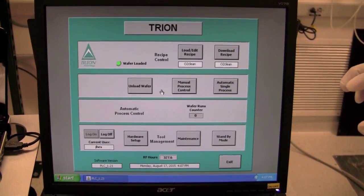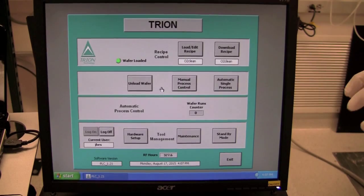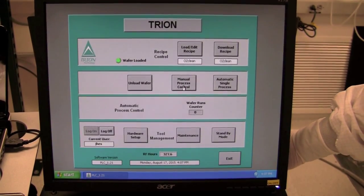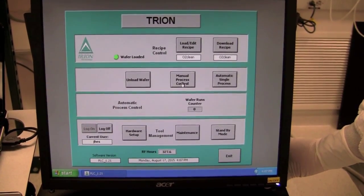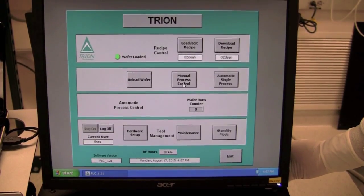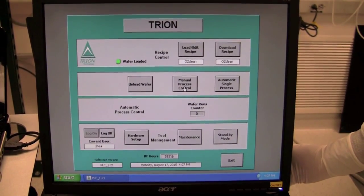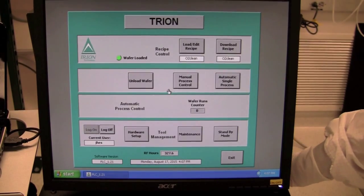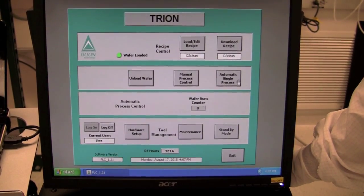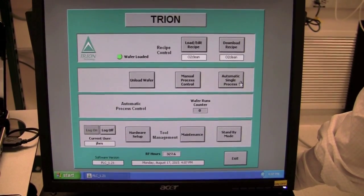Now that we're in the recipes and everything's loaded, we can begin running our process. Before we begin though, I want to make a distinction between manual process control and automatic process control. In manual, which is more for experienced users who have had the training, you can change a lot of other parameters, including the gas flows on the fly. But, for now, we're going to use the automatic single process, which is going to be the most commonly used for the average user.